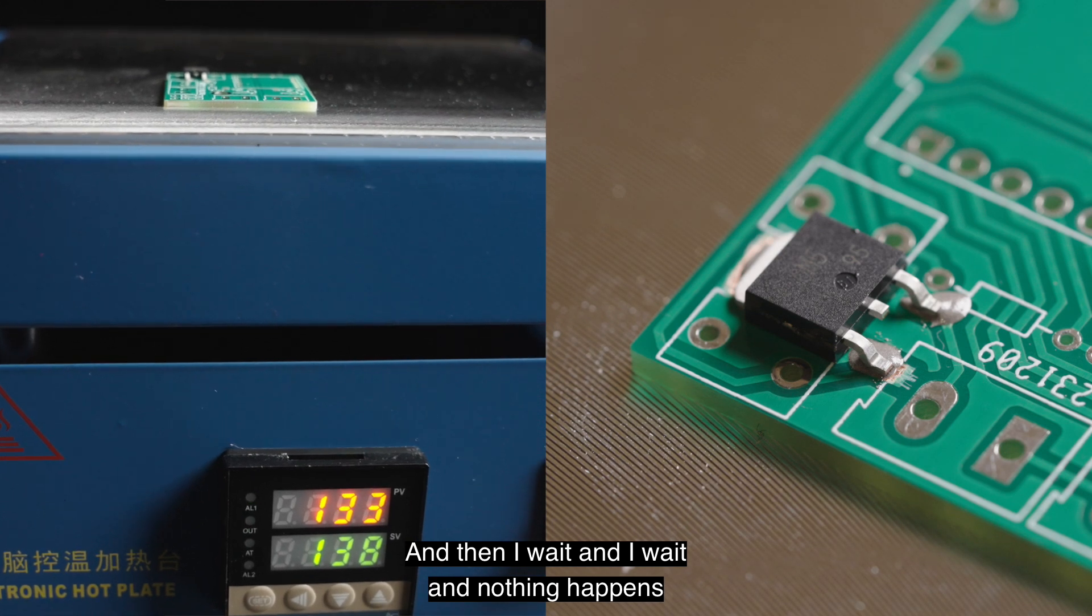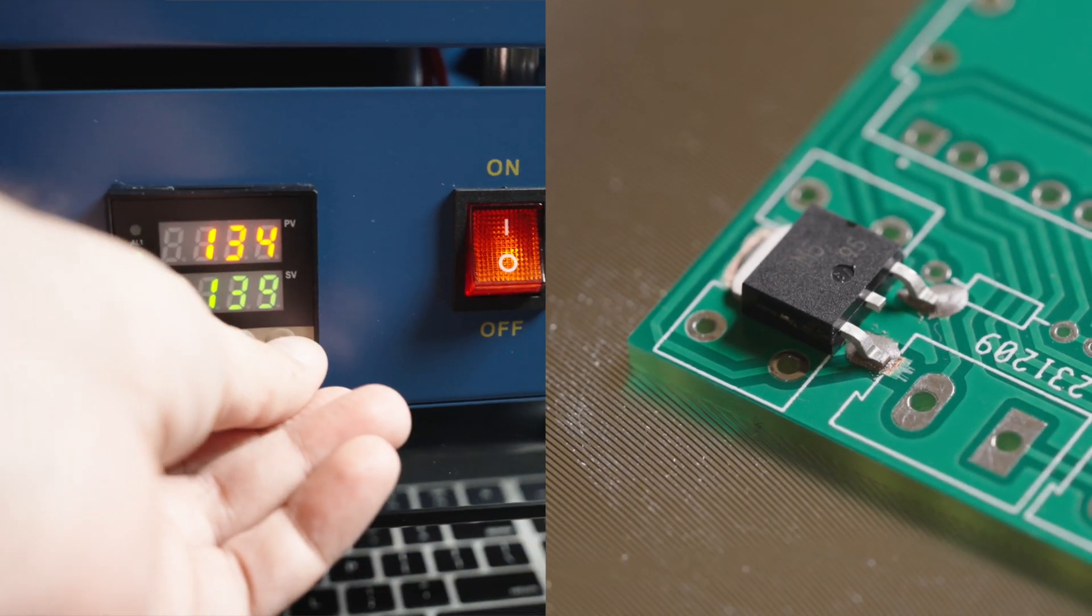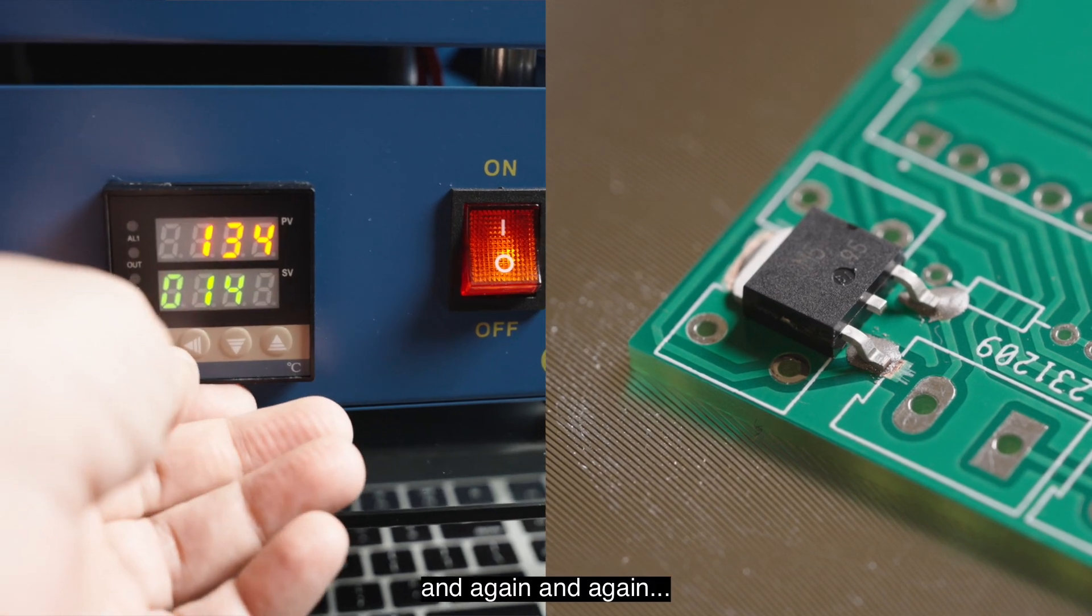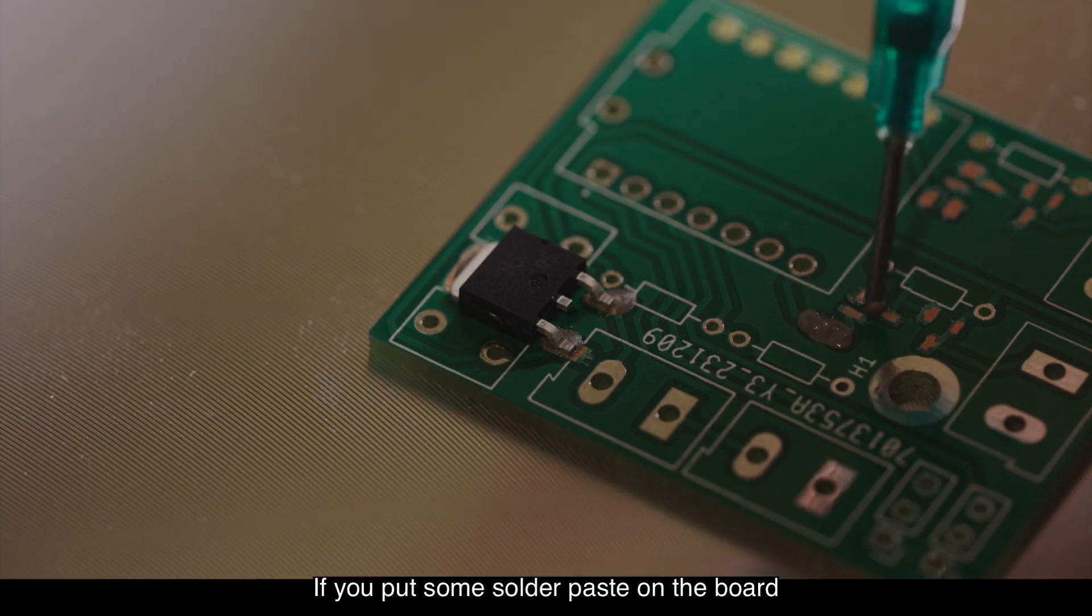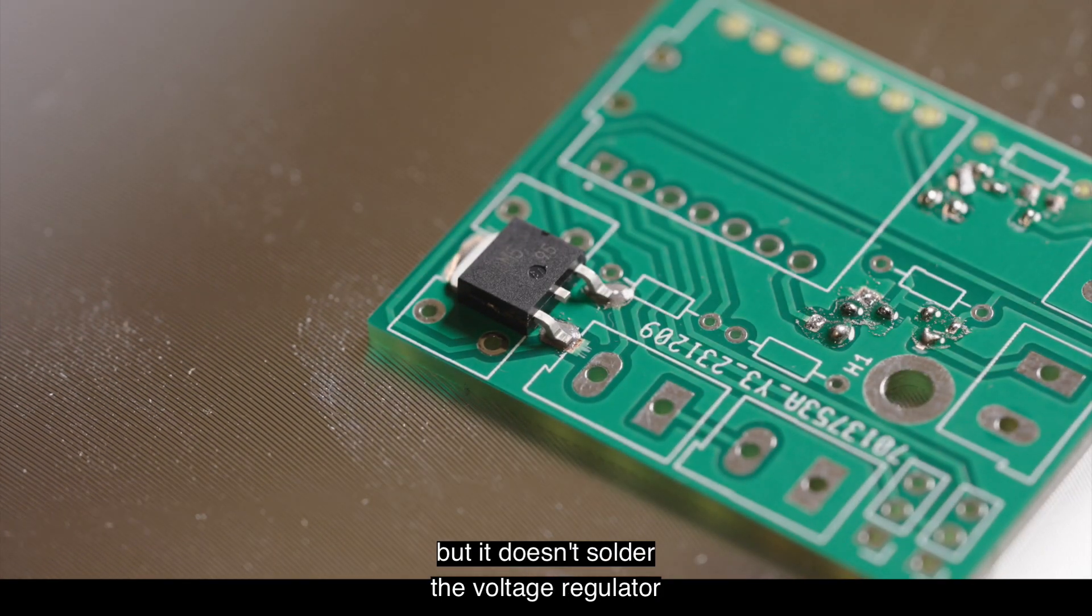And then I wait and I wait and nothing happens. So I rise the target temperature. And again and again. If you put some solder paste on the board it melts immediately, but it doesn't solder the voltage regulator.